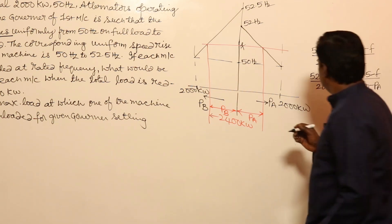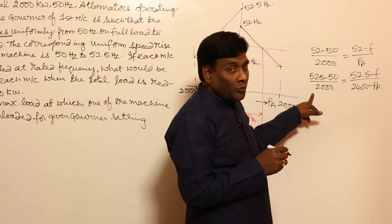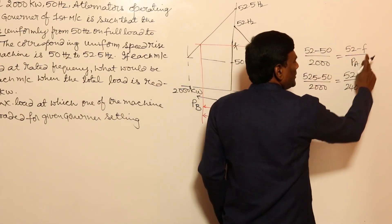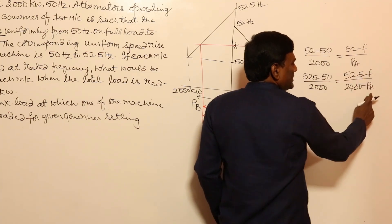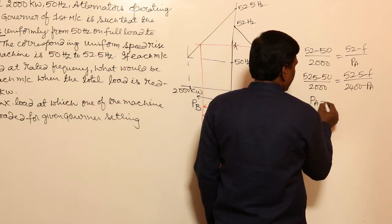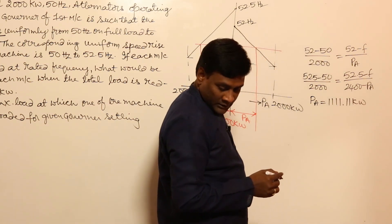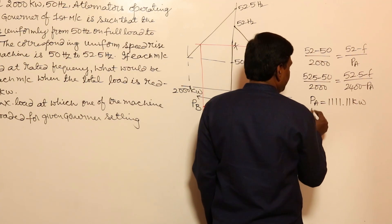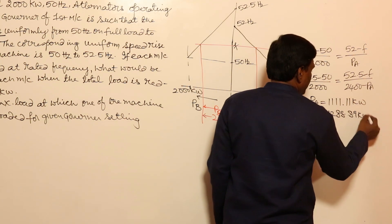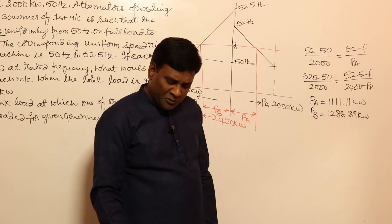We now have two equations with two unknowns — f and Pa. Solving these two equations gives us: Pa equals 1111.11 kilowatt and Pb equals 1288.89 kilowatt.